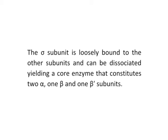The sigma subunit is loosely bound to the other subunits and can be dissociated, yielding a core enzyme that constitutes two alpha, one beta, and one beta prime subunits. The core polymerase has the capacity of catalyzing the polymerization of RNA, which indicates that the sigma subunit is not important in the basic catalytic activity of the enzyme. However, the core polymerase itself cannot start transcription without the help of the sigma subunit.